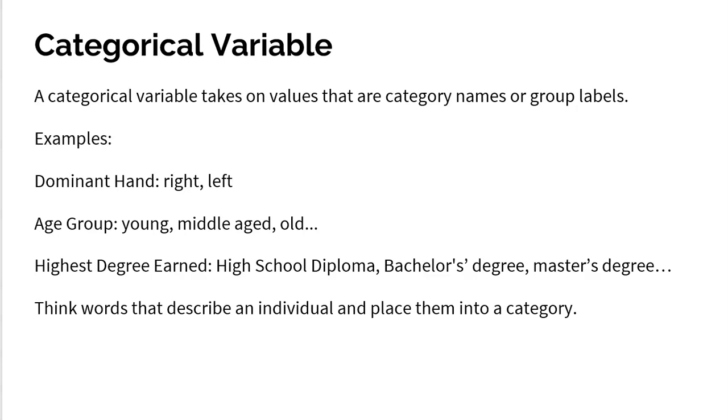Some common examples are dealing with people. People have so many different characteristics about them. Are you left-handed or right-handed? There's a word. That's a category. It's going to put you in the left or the right category.